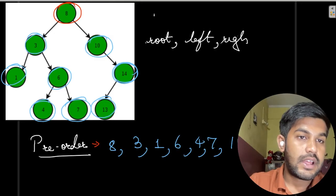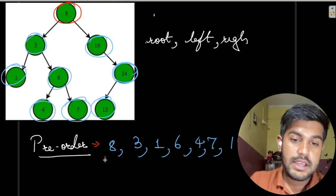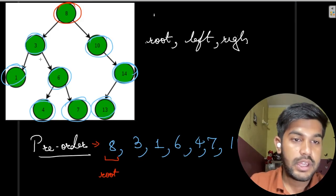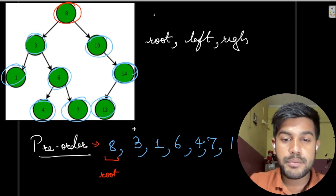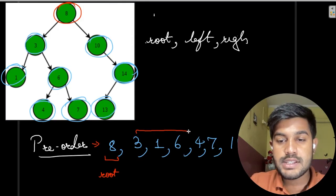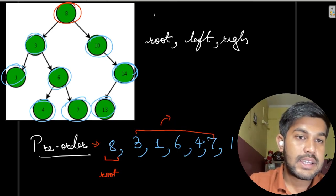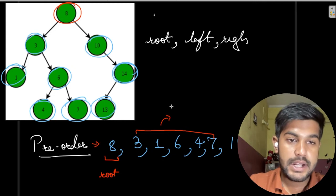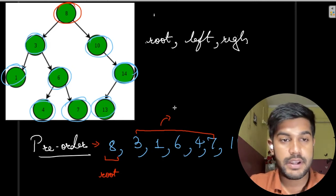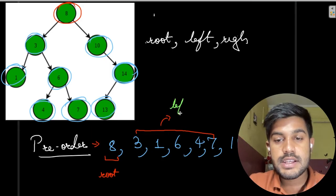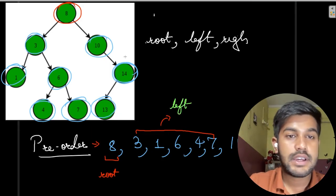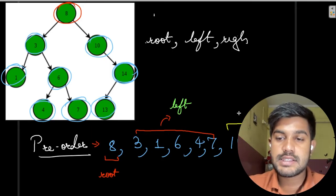If you observe the pattern: this first element is the root. Then we come to 3, 1, 6, 4, 7 — this is nothing but the left side of it. And then 10, 14, 13 — this is the right part of it.